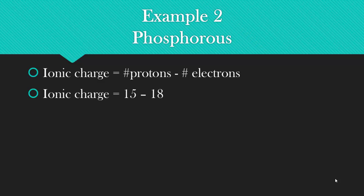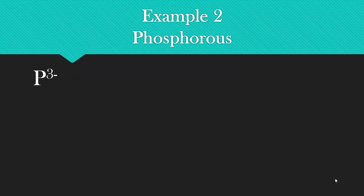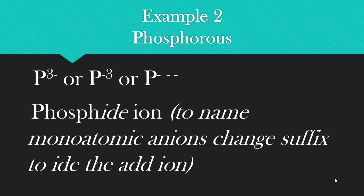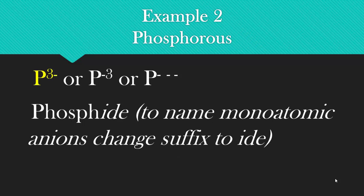So to calculate the ionic charge, we go 15 minus 18, you get minus three. So you say you have P three minus or P minus three or P negative, negative, negative, and you call it the phosphide ion. And here to name a monoatomic anion, you change the suffix of the element to IDE, and then you add the word ion. And I would write it as P three minus.